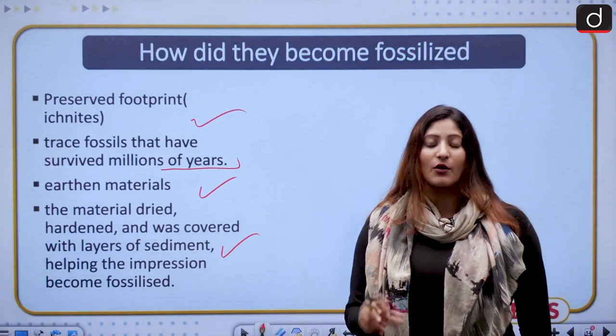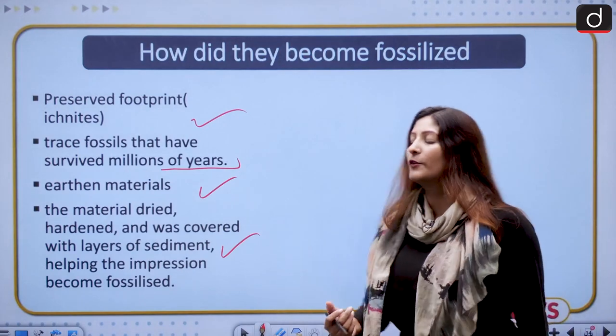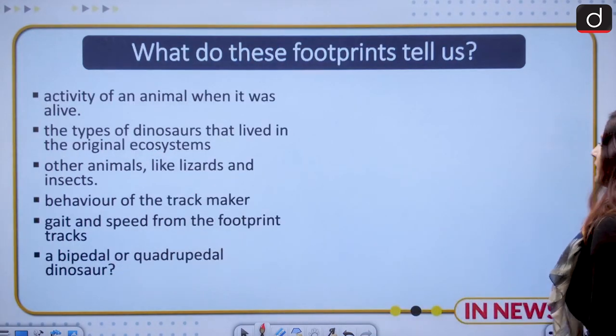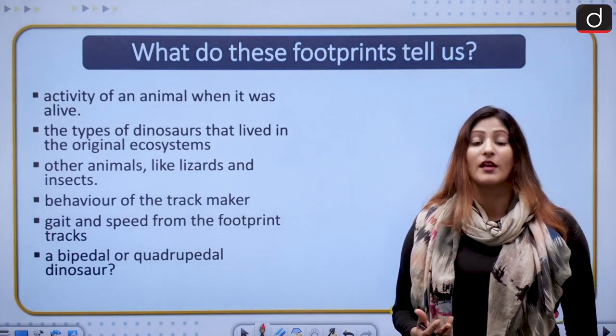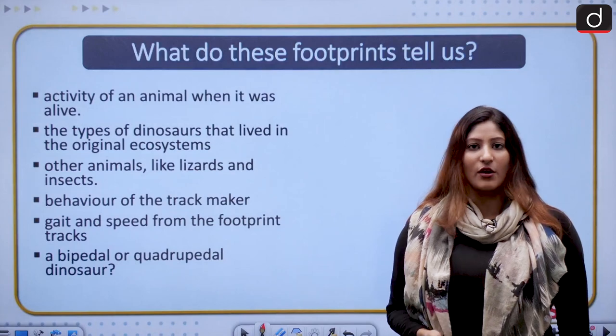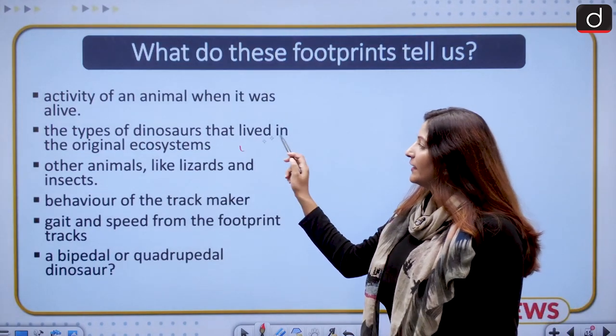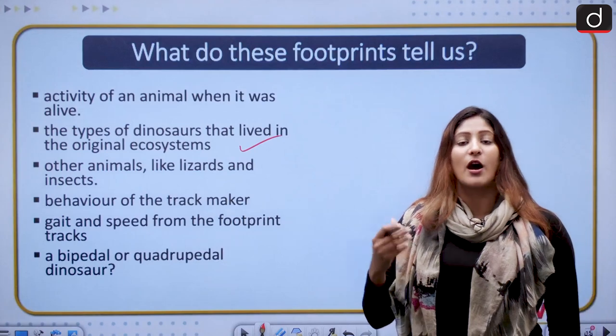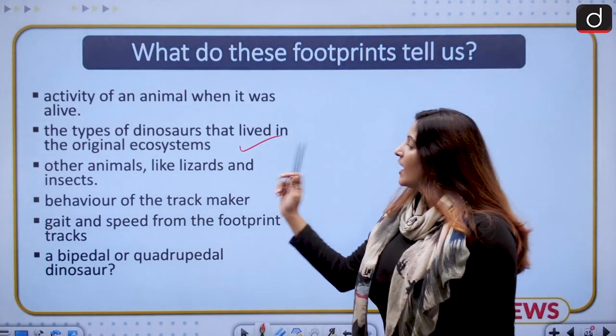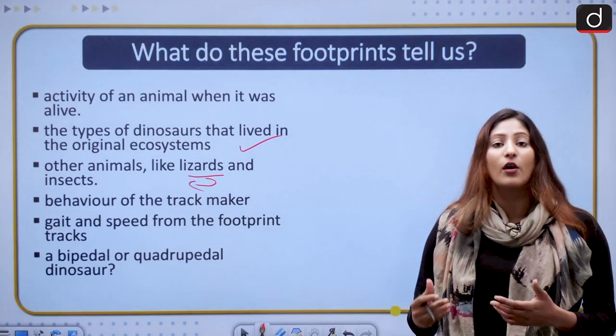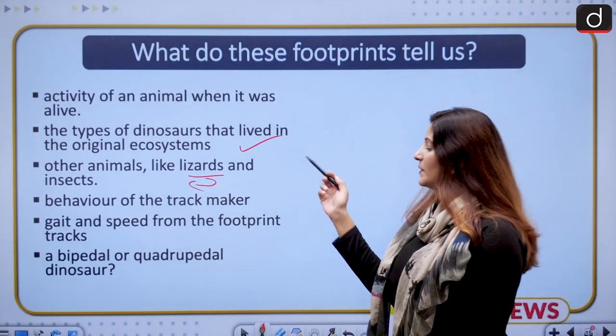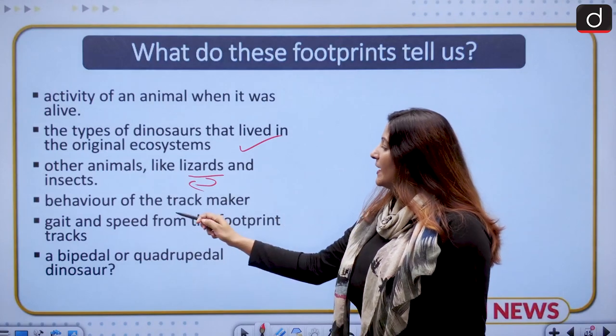Then the material dried over time, hardened, and was covered with layers of sediment. Why are footprints important? They tell us about the activity of the animal and the type of dinosaur that lived in the original ecosystem, how they lived, as well as other animals like lizards and insects that evolved at the same time.